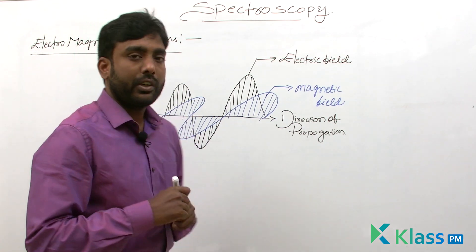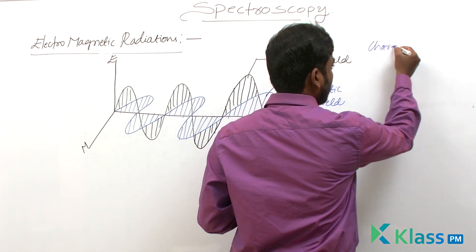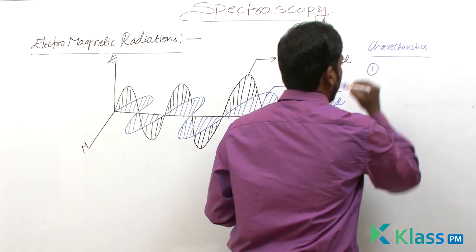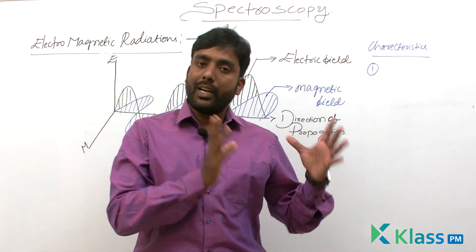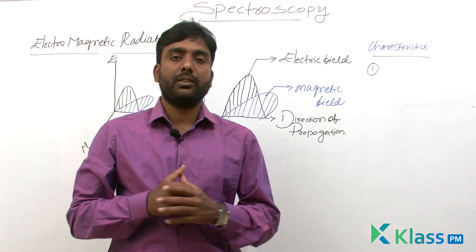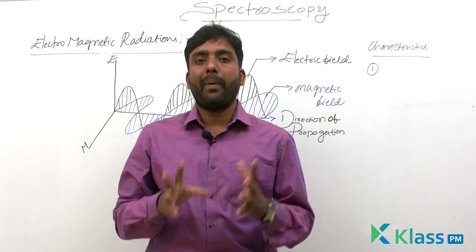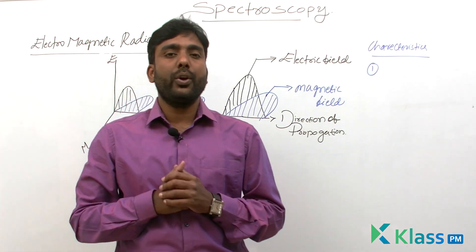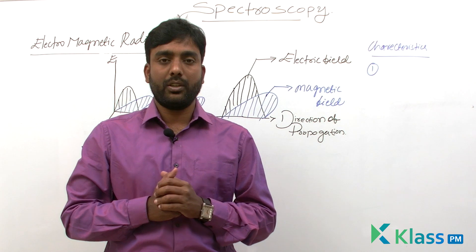Now let's see the characteristics of electromagnetic radiation. The first characteristic: in electromagnetic radiation, both the electric field and the magnetic field are present. These two fields — electric and magnetic — are orthogonal to each other, which means perpendicular to each other. They make oscillations perpendicular to each other.